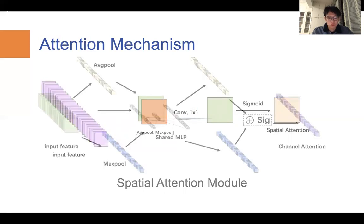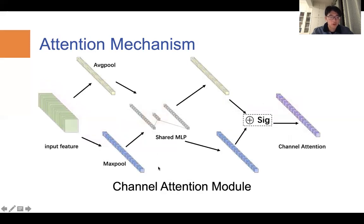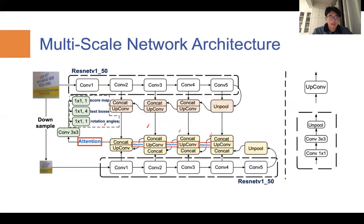The channel attention module, as shown here, outputs the channel attention map, which demonstrates which channel is worth better emphasis for scene text detection task. If you want to get more information, they are illustrated in my paper, and feel free to read it. Now, let's go back to the network architecture.